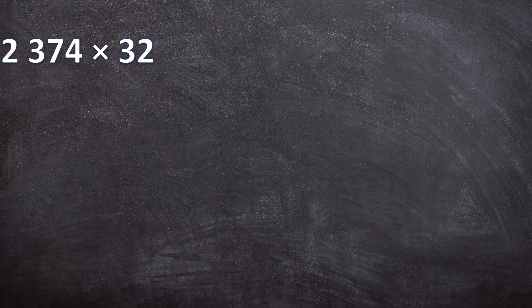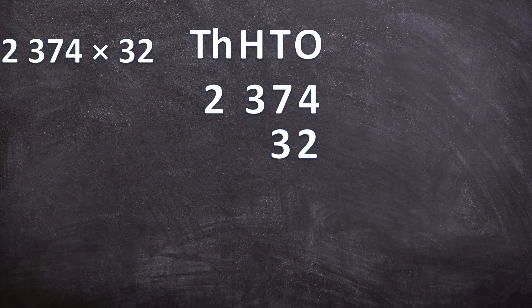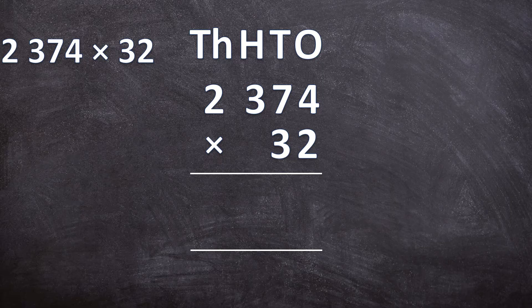The first thing we do is write them neatly underneath each other so that your ones are directly underneath each other, and also your tens. Then write your multiplication sign with your two lines. Just by looking at this it can seem very intimidating, but you just do it one step at a time and you will get your final answer. So the first thing you do is split that 32 — first multiplying with 2 and then with 30.